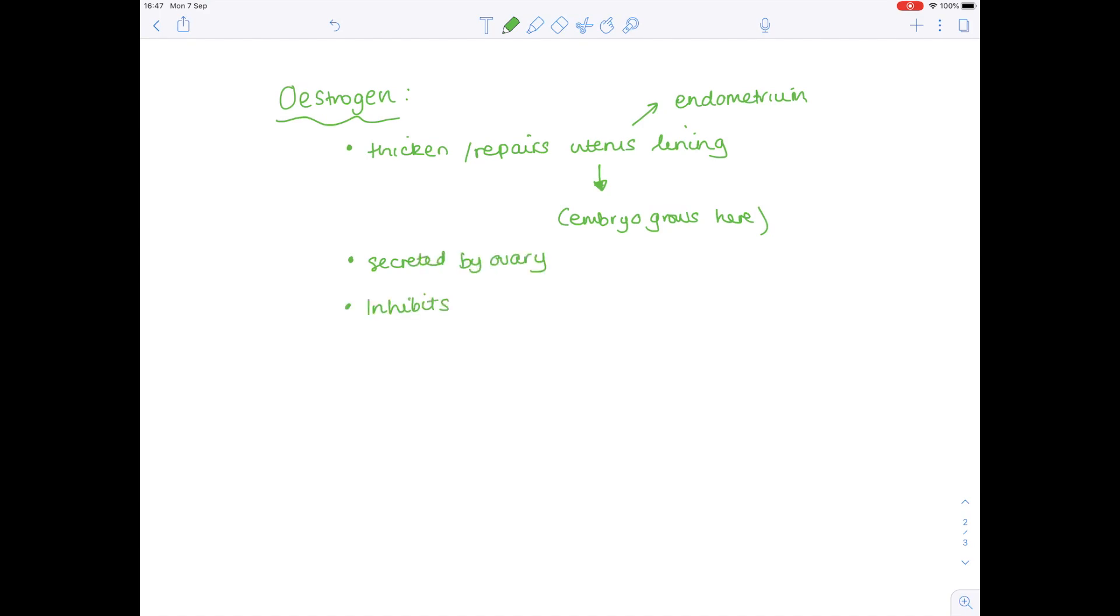Notice it has a second role of inhibiting the production of FSH and LH, which makes sense really. If you're thickening the uterus lining because you're expecting an embryo to implant, there's no point maturing any more of the oocytes, or causing any more ovulation of those eggs, because what's the point if there's already an embryo growing in the uterus? You can grow them at the same time, that would be twins, but you can't have one embryo implant and then a month later have a second one implant. So that's a really important role of estrogen.